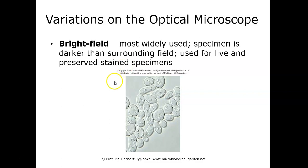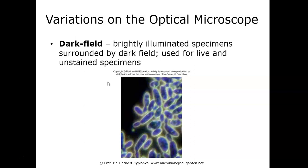Dark field is the opposite: the field of view surrounding the cells is completely dark and the specimens are illuminated, giving a bright specimen against a dark background. Unlike bright field, dark field is used with unstained or live specimens.